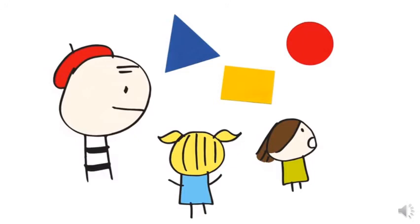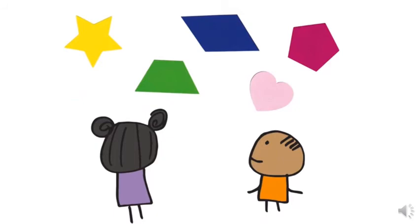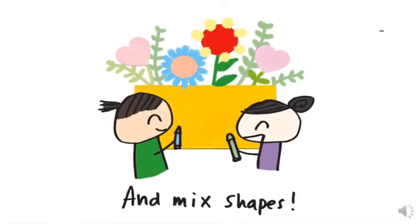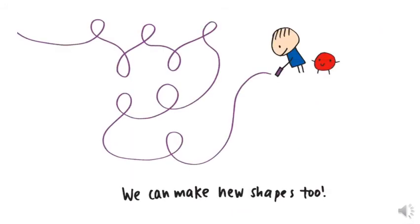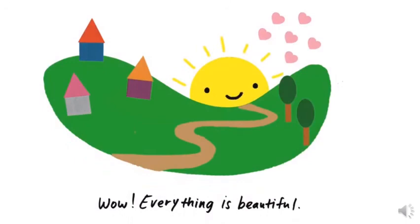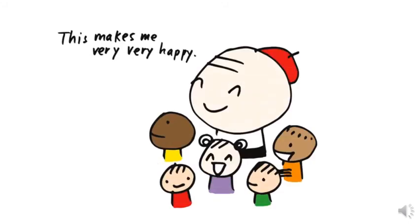Let's see what we have. We need to start to combine the star, trapezoid, diamond, heart, pentagon, hexagon — all the shapes together. We can add lines and mix shapes. We can make new shapes too. We can put shapes together. Wow, everything is beautiful. When I mix all the shapes, everything is beautiful. We can make a beautiful painting. This makes me very, very, very happy.